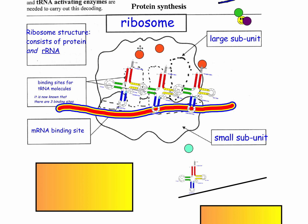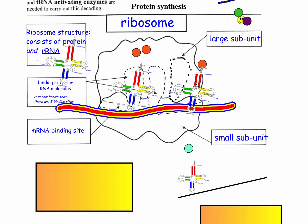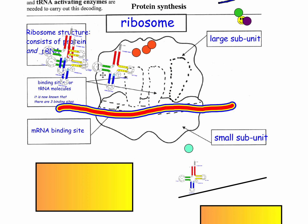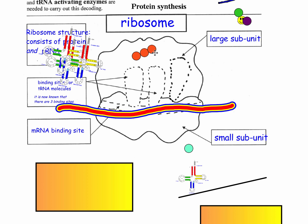These amino acids start building a chain, connecting together, and moving down and exiting one at a time, giving you a growing chain of amino acids. In the end, you get a big sequence of a whole bunch of amino acids — every codon, every three letters, codes for one amino acid.